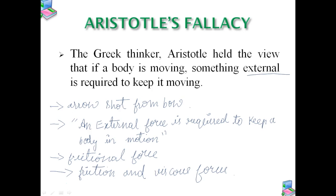This explains why forces by external agencies are necessary — to overcome the frictional forces and keep bodies in motion. So we now understand where Aristotle went wrong. His idea was that something external is always required to keep a body moving, but in the case of uniform motion, no external force is needed by the child if there is no frictional force on the car. This was the basic idea given by Aristotle, and it is proved to be wrong. In the next part, we will study what is the law of inertia.